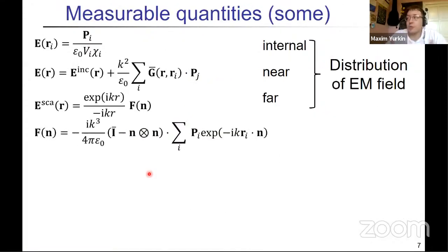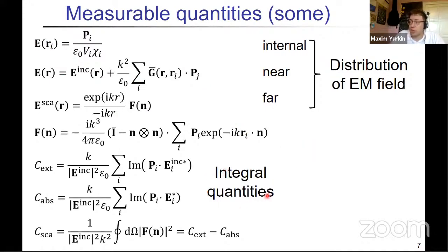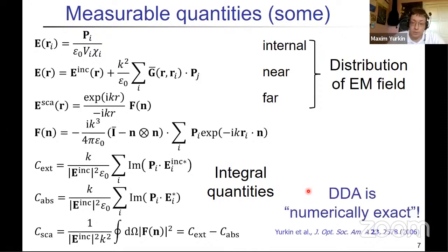And once you solve these linear equations, you get dipole positions for internal fields, and then you can compute easily anything you want. So basically, you can get near fields, far fields, you can get some integral quantities, which you are used to, backscattering cross-section, whatever you want. So that's all easy to compute, and that usually takes a minor fraction of the computational time, once you know the internal fields.